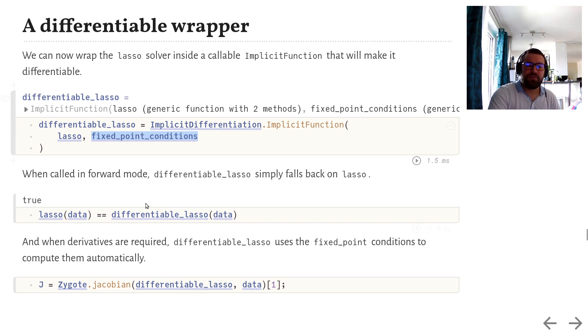And this has two main aspects. When you call differentiable lasso in forward mode, when you only want to find the vector beta, you see that it falls back on the lasso because both of their outputs are equal. But when derivatives are required, differentiable lasso uses the implicit function theorem behind the scenes, along with the fixed point conditions, and computes derivatives automatically.